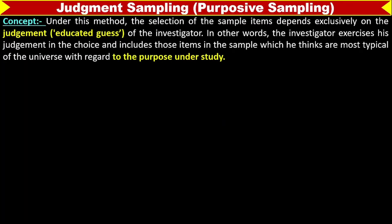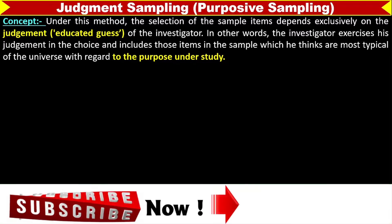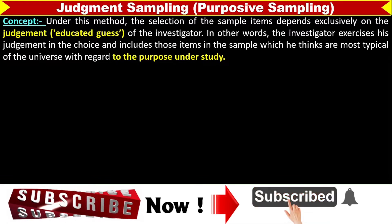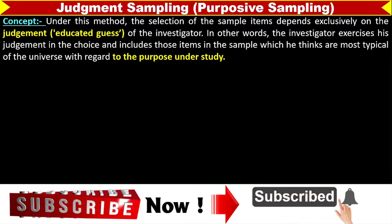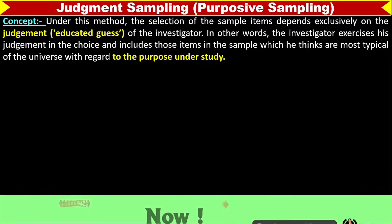Judgment sampling. Under this method, the selection of the sample items depends exclusively on the judgment or educated guess of the investigator. In other words, the investigator exercises his judgment in the choice and includes those items in the sample which he thinks are most typical of the universe with regard to the purpose or subject under study.